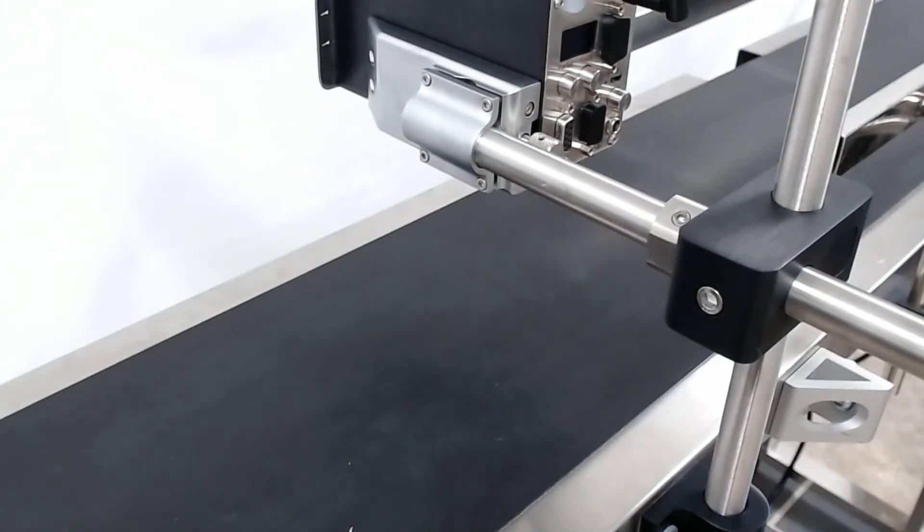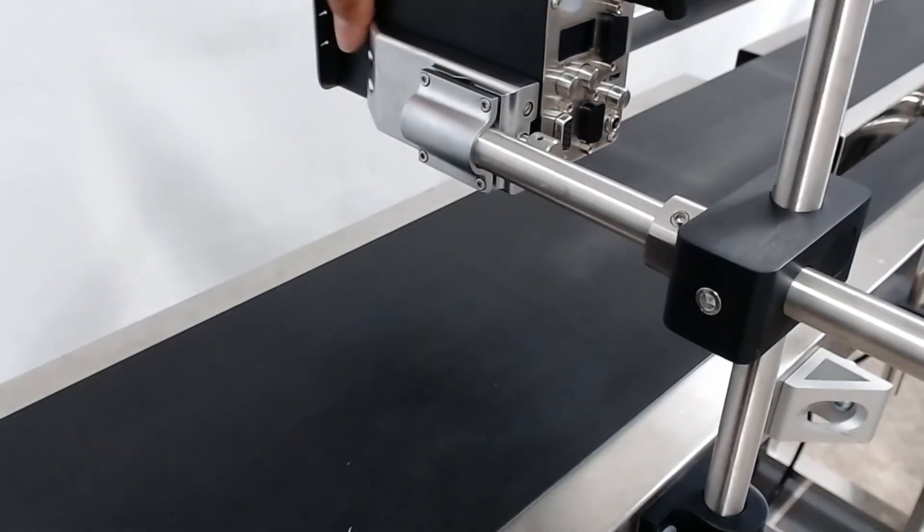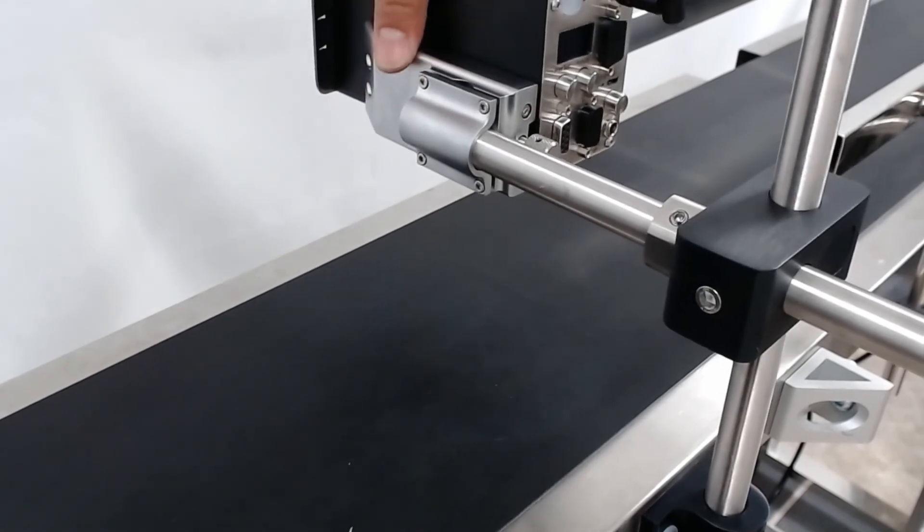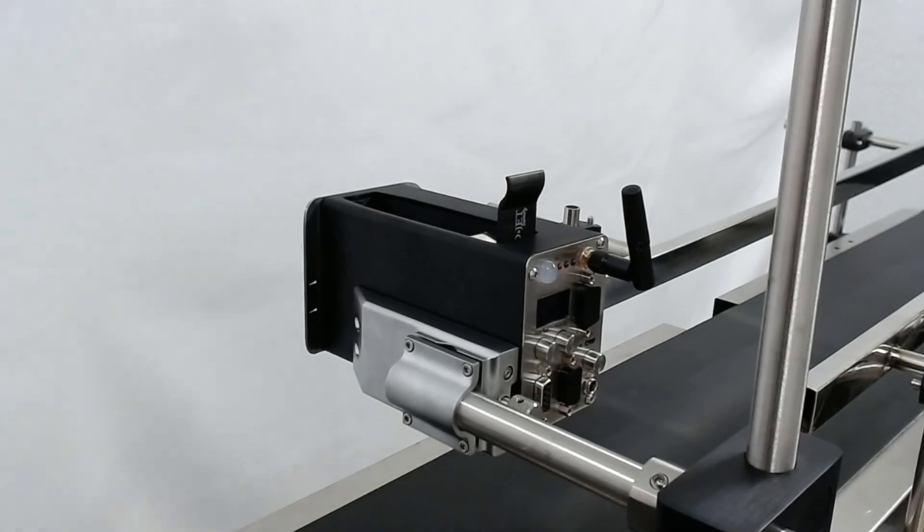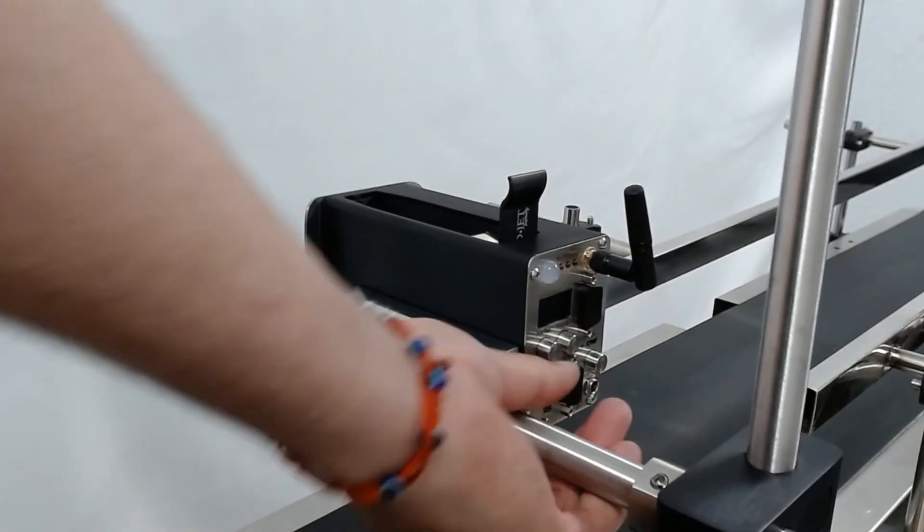And now our printer is good and tight, secure in its spot. You see we have no movement from one side to the other. And we can go ahead and we can adjust our printer however we want with our thumb screw here.